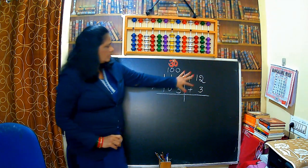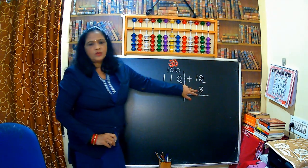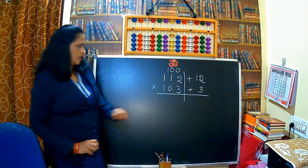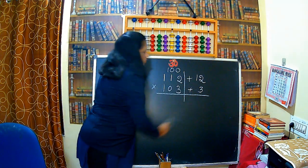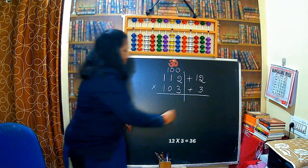Now multiply this 12 and 3 in the right hand side and write in the right hand side. So 12 × 3 is 36.